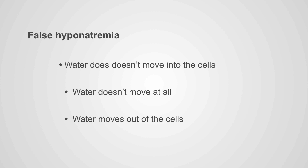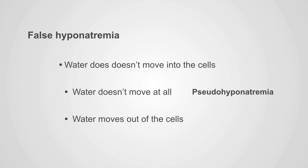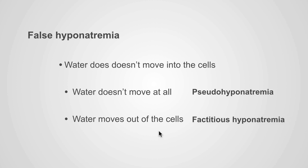There are two varieties of false hyponatremia. In one, the water does not move at all — we call that pseudohyponatremia. And in the other, the water moves out of the cells, and we call this factitious hyponatremia.